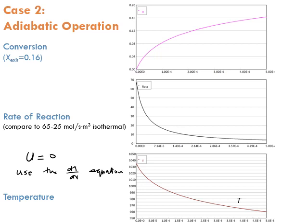It's no longer isothermal operation, so we have to use the dT/dV equation — no more the isothermal equation. Because the operation is adiabatic, you have to set U, the overall heat transfer coefficient, to 0. The conversion is still increasing down the length of the reactor; however, we achieve only 16% compared to 50% conversion when operated isothermally.